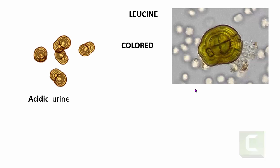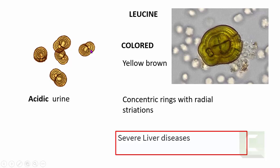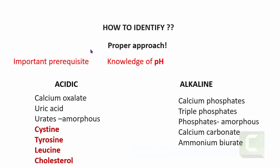The next important amino acid crystal is the leucine crystal — also pathological. It is a colored crystal found in acidic urine, yellowish-brown in color. Leucine crystals appear as spherical bodies with concentric rings and radial striations — a very classical appearance. They are found in conditions of severe liver disease. This completes the crystals found in acidic urine: oxalate, uric acid, amorphous urates, and the pathological crystals — cysteine, tyrosine, leucine, and cholesterol.